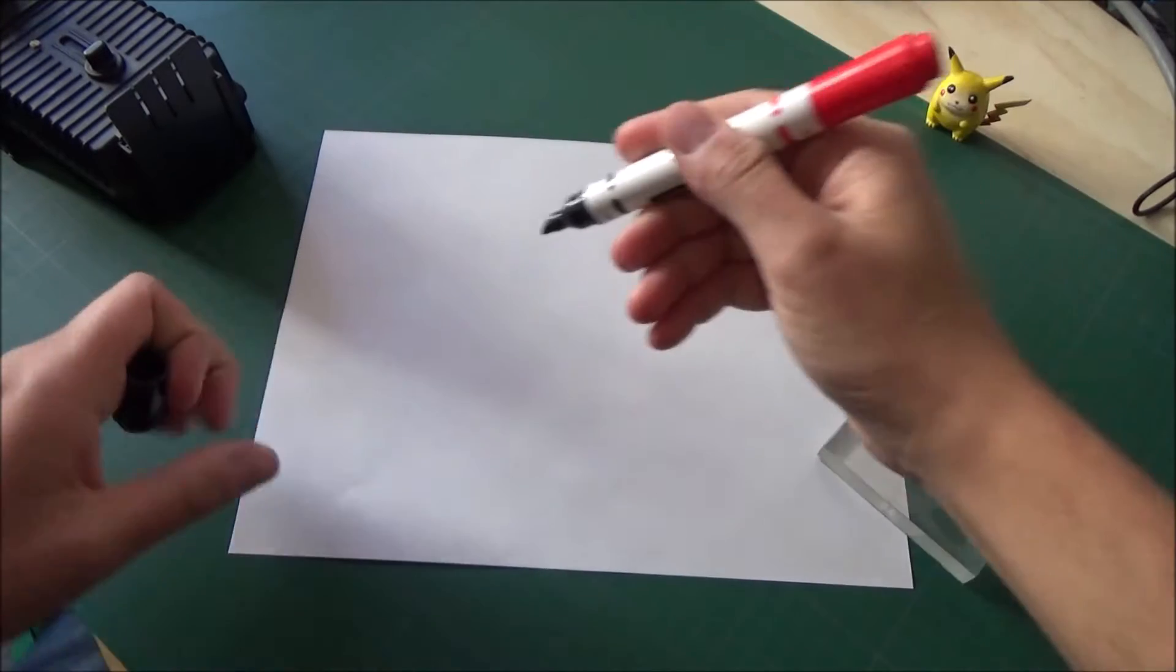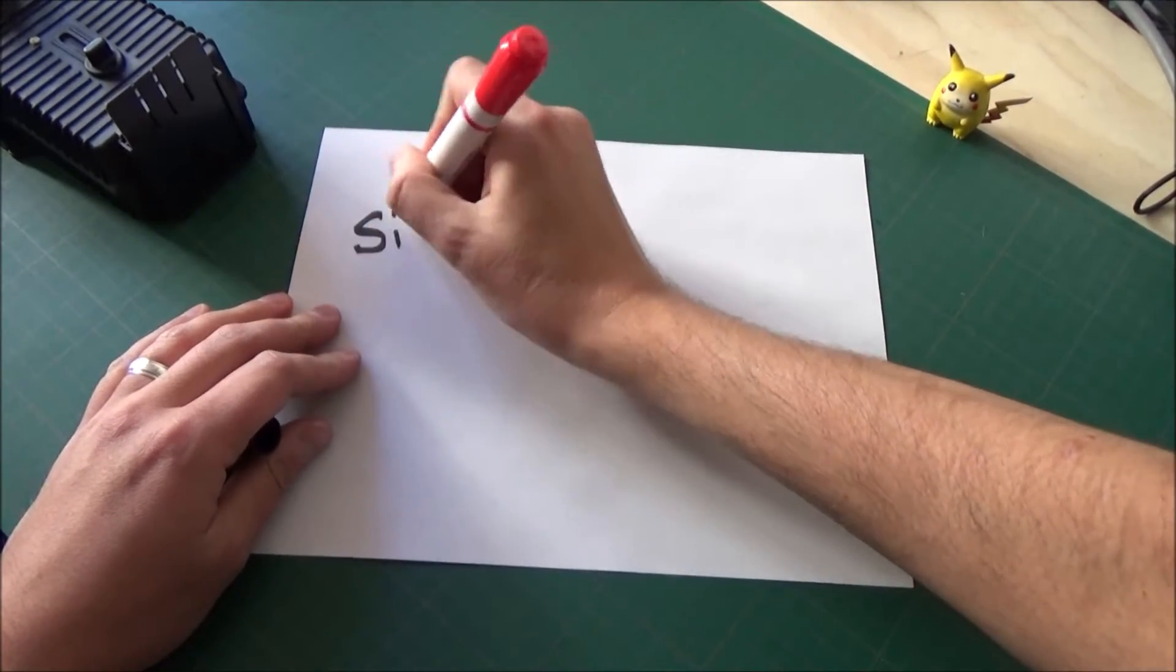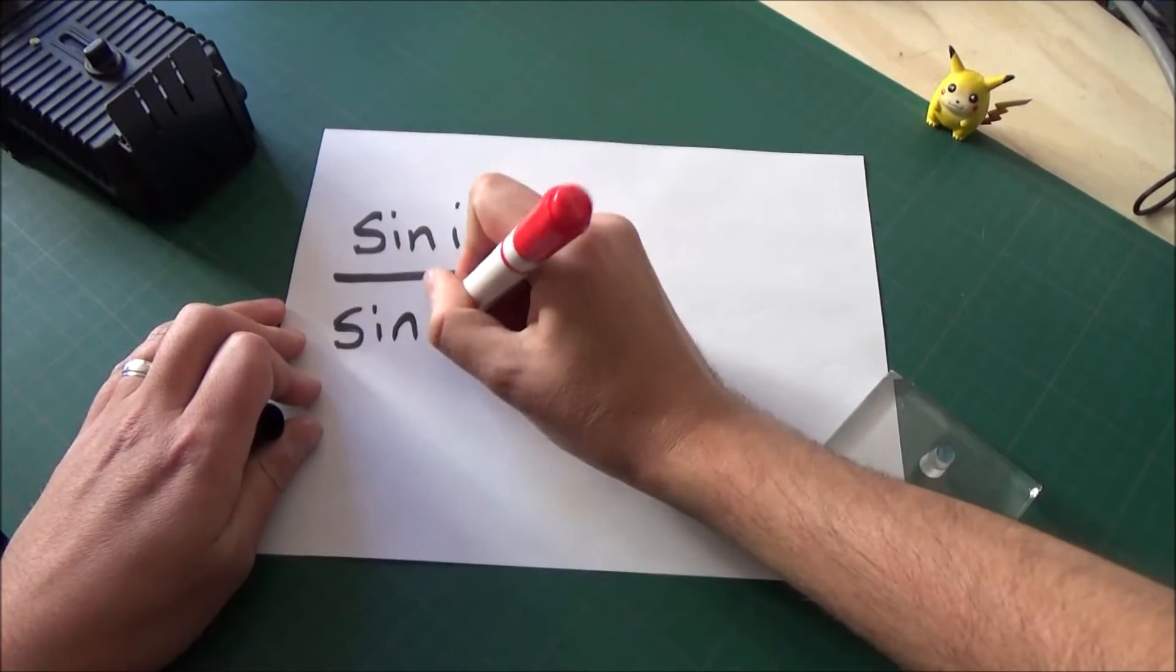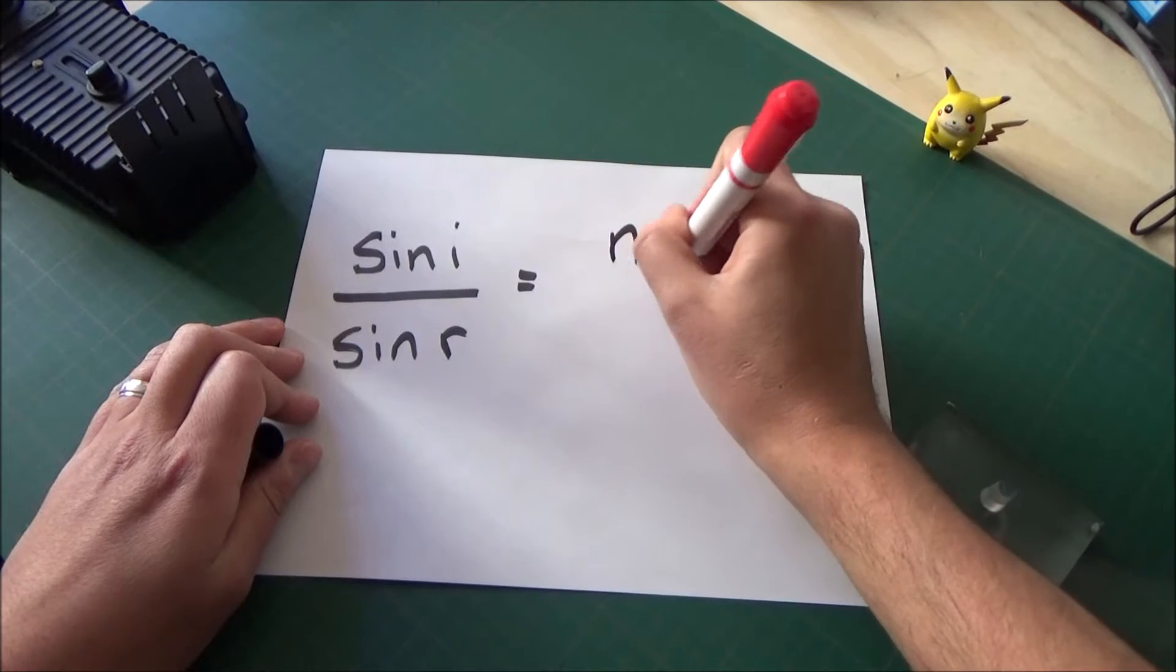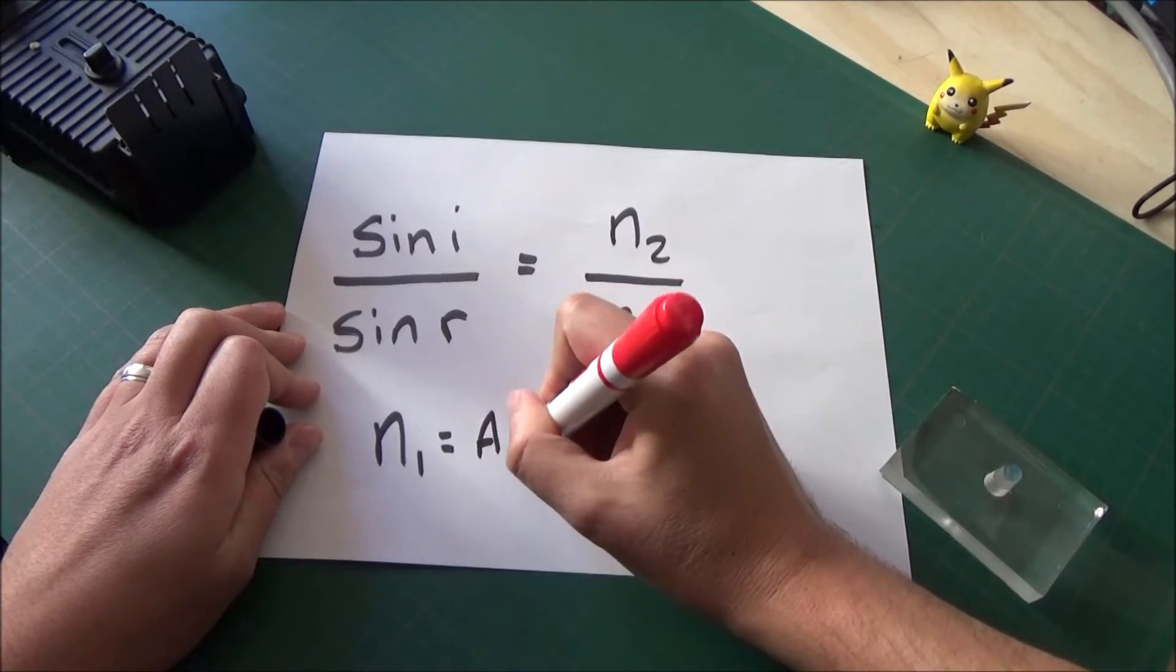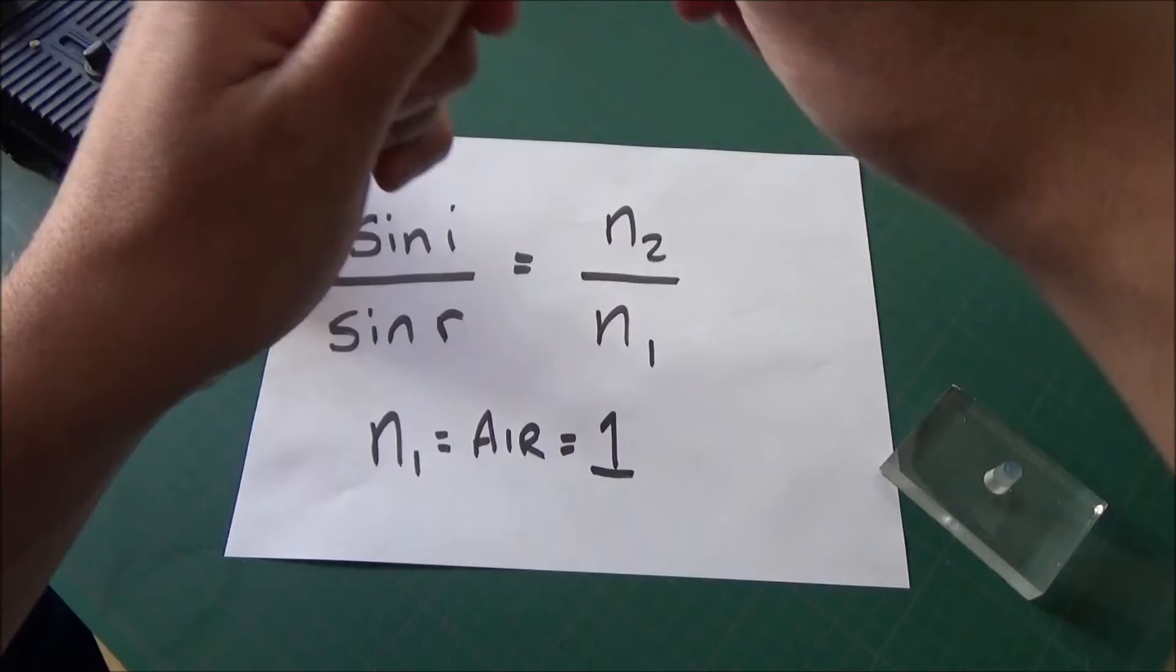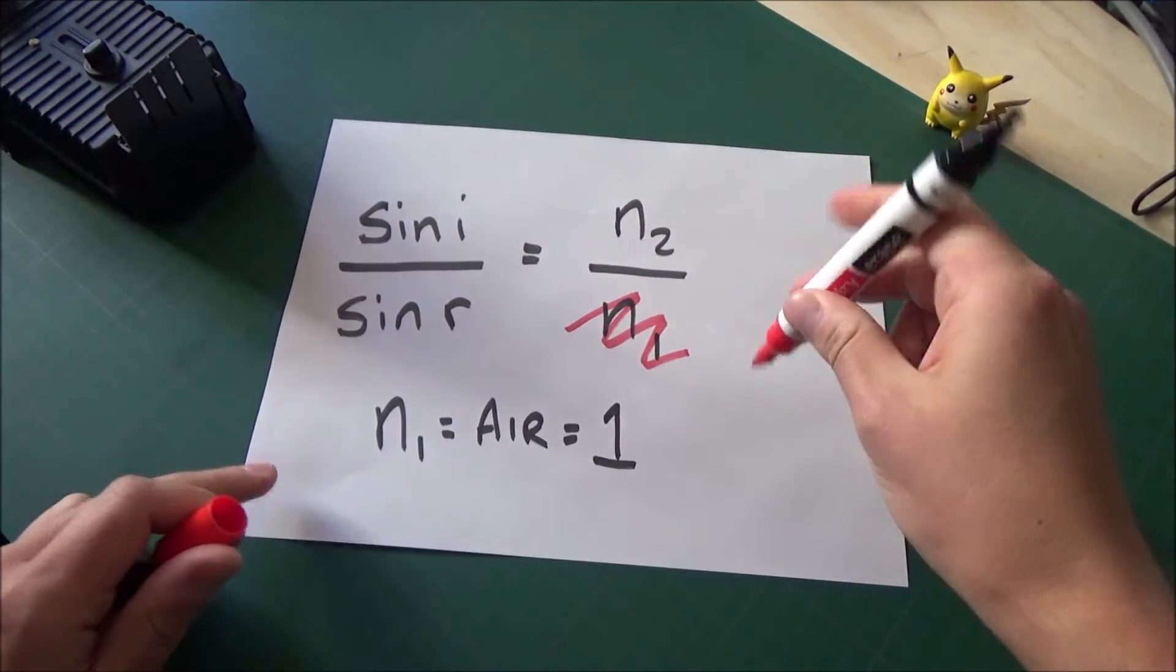For all three of these methods, we're going to use the same equation: the sine of the angle of incidence divided by the sine of the angle of refraction will equal the second refractive index, in this case perspex, divided by the first refractive index. Now, in this case, the first refractive index is air, and air has a refractive index of about 1. Because of this, we can essentially cancel out the n1, because we're dividing by 1.